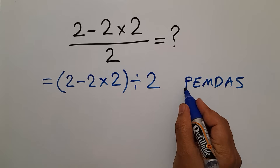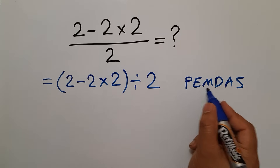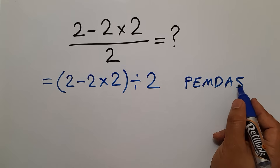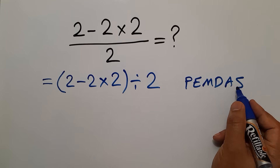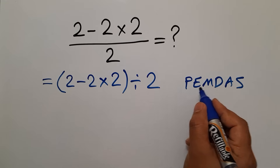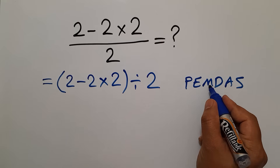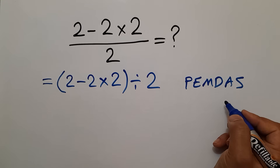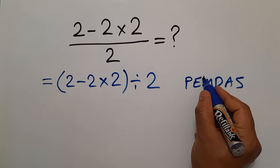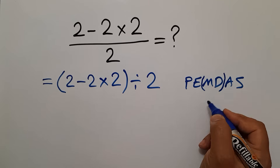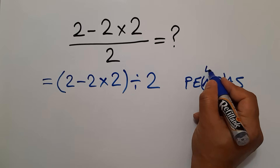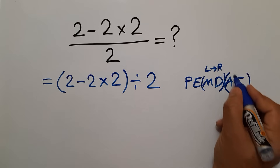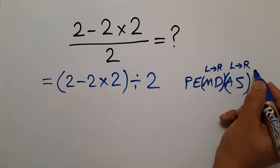P stands for parentheses, E stands for exponents, M and D stand for multiplication and division, and A and S stand for addition and subtraction. We first do parentheses, then exponents, then multiplication and division, and finally addition and subtraction. Remember that multiplication and division have equal priority and we work from left to right. The same applies to addition and subtraction — we work from left to right.